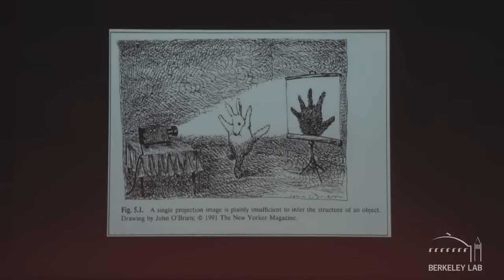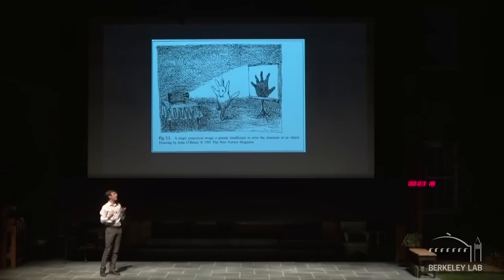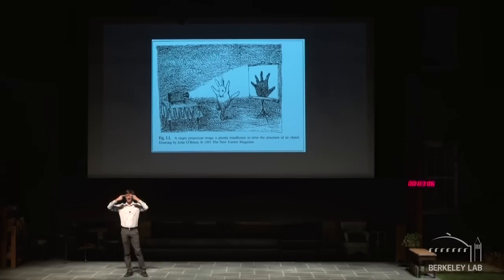The problem is illustrated by this cartoon: here we have a funny bunny standing in front of a projector. If you could only look at the screen, you might think what's between the source and the detector is a hand — but it's actually the bunny. Looking from different orientations, you'd figure out something funny is going on. I want everyone to try an experiment: close one eye, hold your fingers up close in front of your face, and try to touch your two fingers together. It's kind of hard, right? Now open both eyes and try again — it's much easier. Your brain has two eyes, so it gets two views and constructs a three-dimensional image of everything you're looking at.